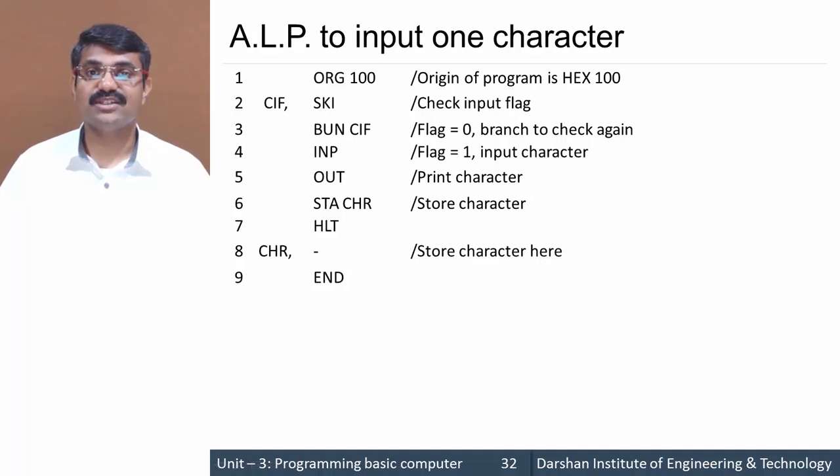SKI stands for skip on input flag. We know there are two flags available: one for input, that is FGI, and another for output, that is FGO, which we've already discussed in the input/output system of our basic computer.